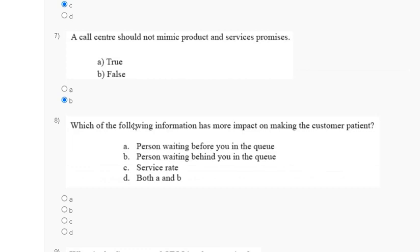Question number eight: which of the following information has more impact on making the customer patient? Options: before meeting the person waiting in front of you in the queue; person waiting behind you in the queue; service rate; or both A and B. The answer appears to be option C, but the speaker notes they are not one hundred percent sure, so no answer is ticked.